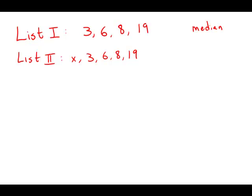So list 1 is already in numerical order, but there are only four numbers on the list, so there's no number exactly in the middle. When we have two numbers in the middle, when there's an even number of entries on the list, we average the two middle numbers.